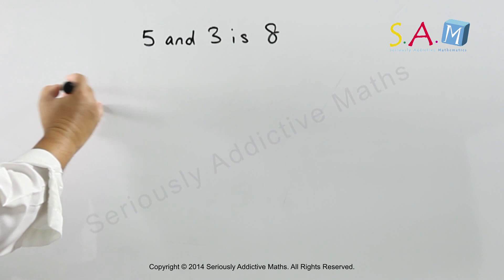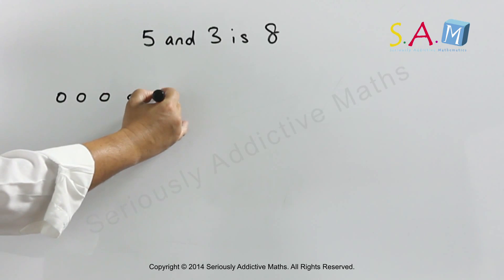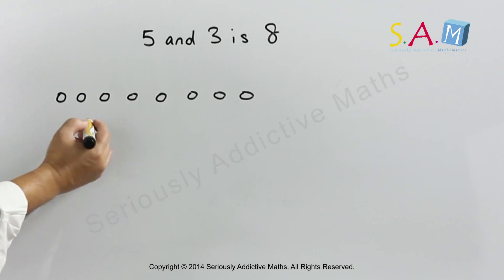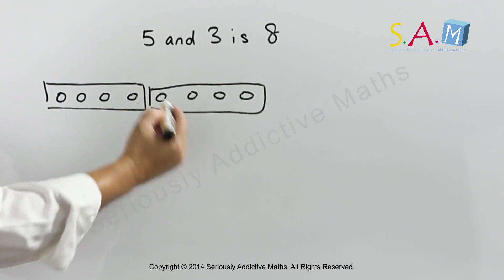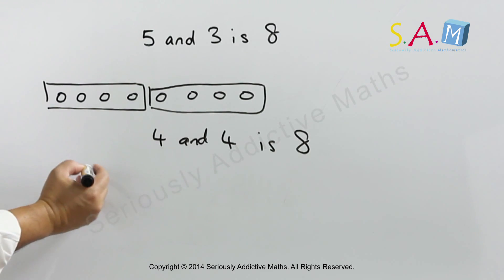We can add 1, 2, 3, 4, 5, 6, 7, 8. We can also have 4 and 4 make 8. We can also have other numbers that make 8.